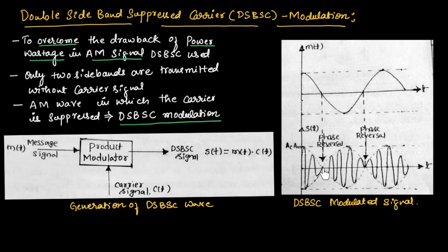At T equal to 0, there will be a phase reversal or phase shift. As you can see here, we are having a negative half of the waveform, and at T equal to 0 again we get the negative half, which means there is a phase reversal or phase change. In the same way, we have a positive half here, and at T equal to 0 again we get the positive half of the waveform, which is also a phase reversal or phase shift.